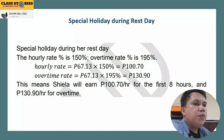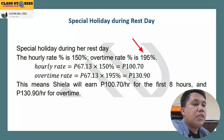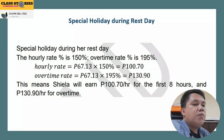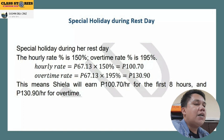Now let's compute for Sheila working on a special holiday during her rest day. Checking the table, the hourly rate is 150% and the overtime rate is 195%. Using 67.13 times 150% equals 100.70 pesos per hour for 8 hours. Her overtime rate: 67.13 times 195% equals 130.90 pesos per hour. This means Sheila earns 100.70 pesos for her first 8 hours and 130.90 pesos per hour for overtime.